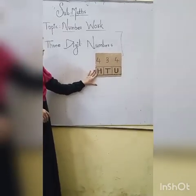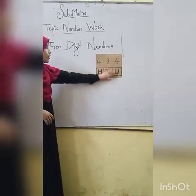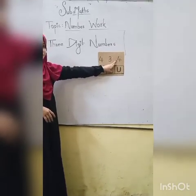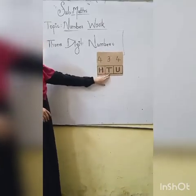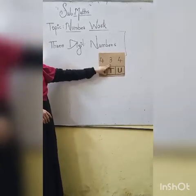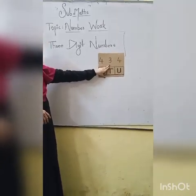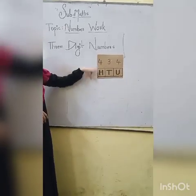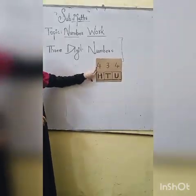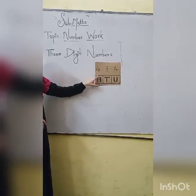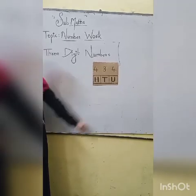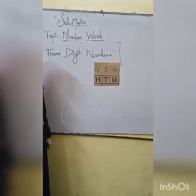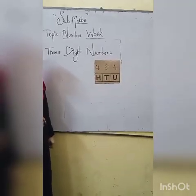So students, tell me: on the units place, which number is there? Four. On the tens place, which number is there? Three. And on the hundreds place, which number is there? Four. Now read the number. Four hundred and thirty four.